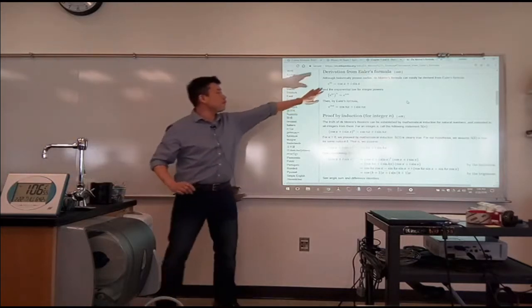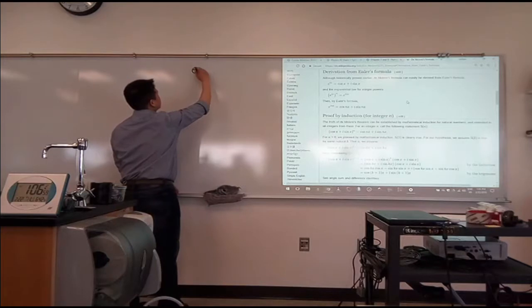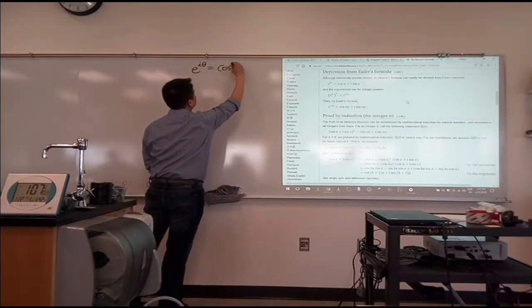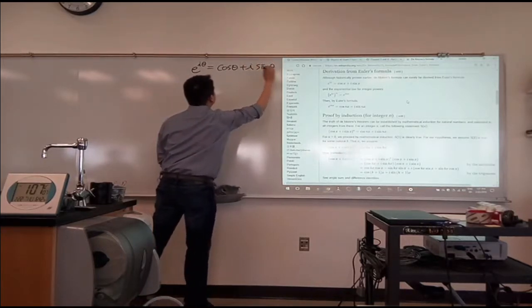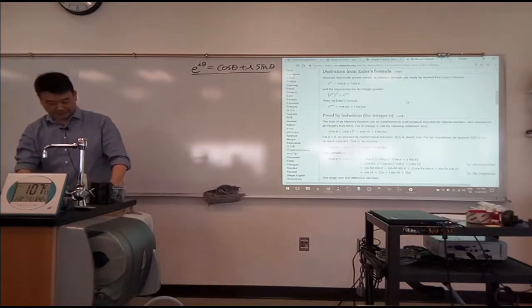The starting place is Euler's formula. Let me write it down because you're going to need that. E to the i theta is equal to cosine theta plus i sine theta.